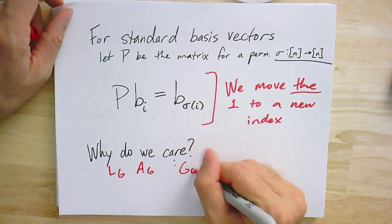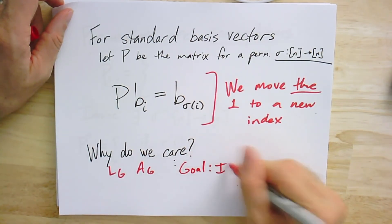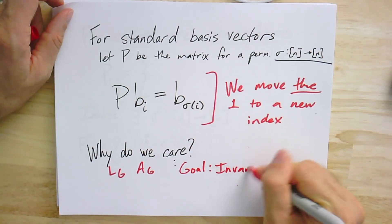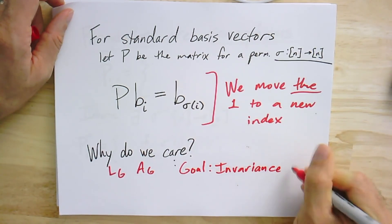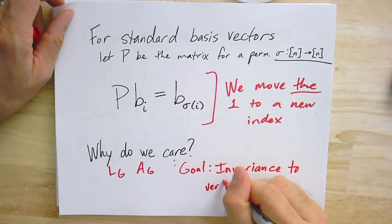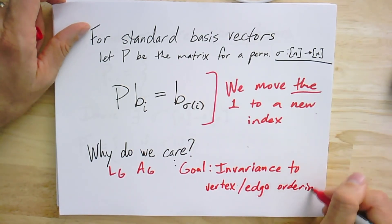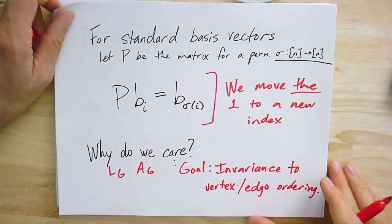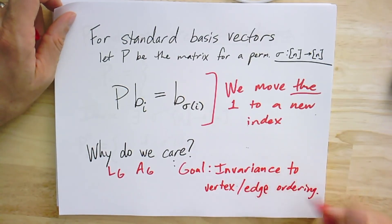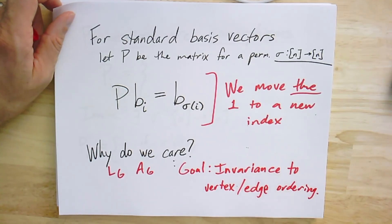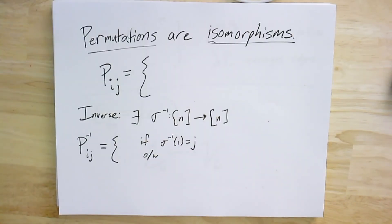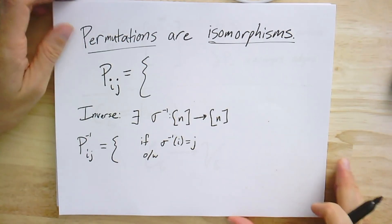So we want to see to what extent applying a permutation is going to affect or change these objects and what they mean for the invariants we extract from them. The goal is invariance to vertex and edge ordering.